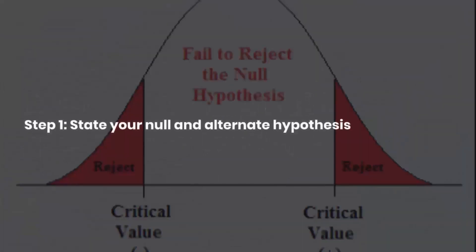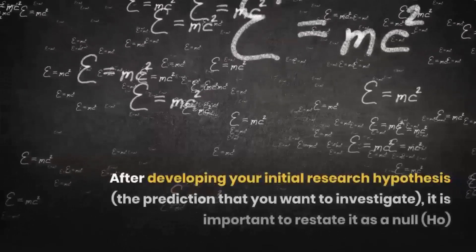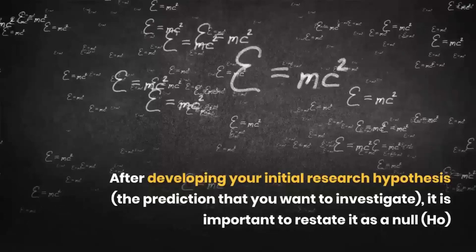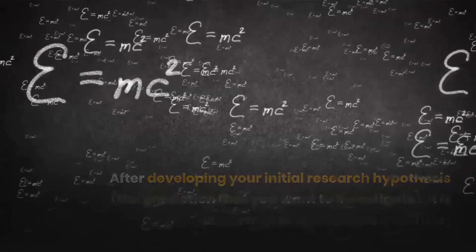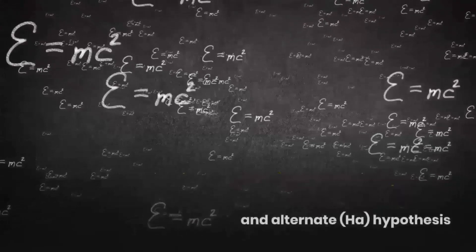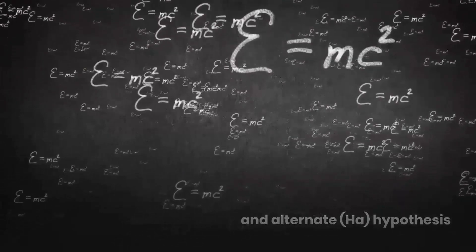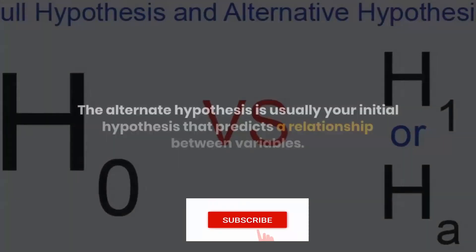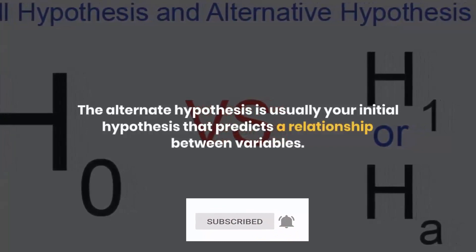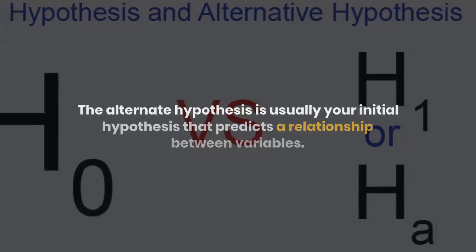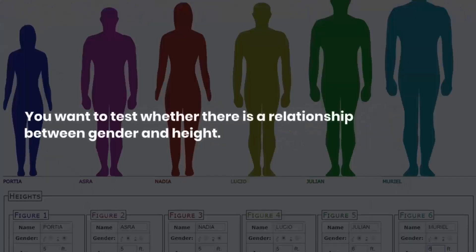Step 1: State your null and alternate hypothesis. After developing your initial research hypothesis, the prediction that you want to investigate, it is important to restate it as a null (H0) and alternate (Ha) hypothesis so that you can test it mathematically. The alternate hypothesis is usually your initial hypothesis that predicts a relationship between variables. The null hypothesis is a prediction of no relationship between the variables you are interested in.